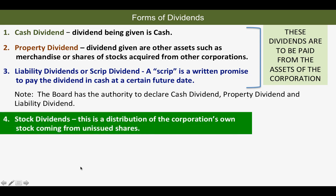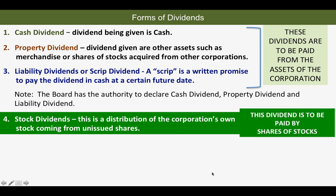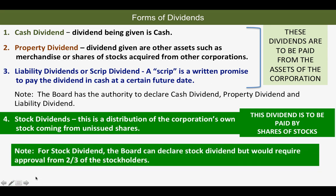The fourth dividend is stock dividend. This is a distribution of the corporation's own stock coming from unissued shares — these are the stock certificates of the corporation, and this dividend is paid by shares of stock. For stock dividend, the board can declare it, but it requires approval from two-thirds of the stockholders.